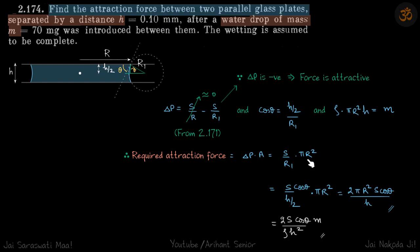R1 is h/2 divided by cos theta, and area is pi r squared. We put the value of R1 here, which is h/2 by cos theta, and put the value of r from the volume equation, and we get the required attraction force.